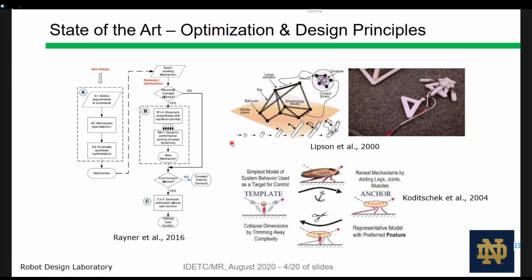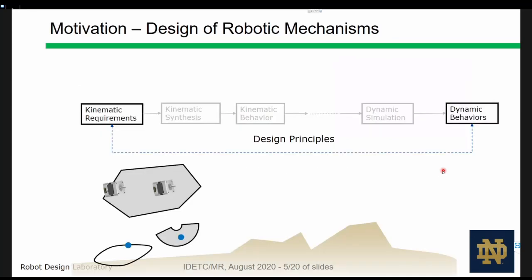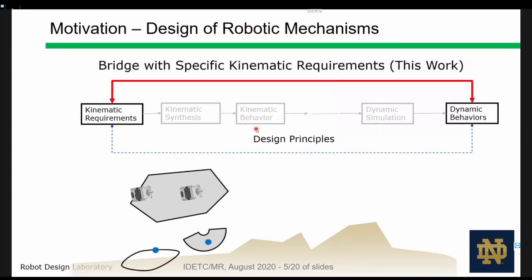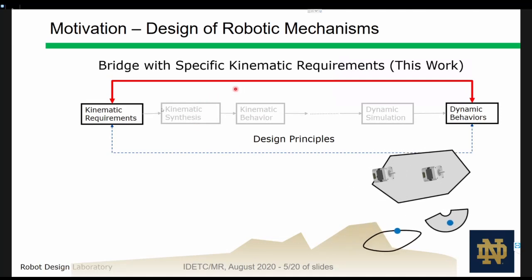However, they are largely bio-inspired or based off of experimental needs, and these efforts build in a direct connection between the rigid bodies that have a mechanism and the resulting dynamic performance. The connection between kinematic requirements and dynamic behavior is still quite vague. In this work, we aim to strengthen a direct connection between kinematic requirements and dynamic behaviors.